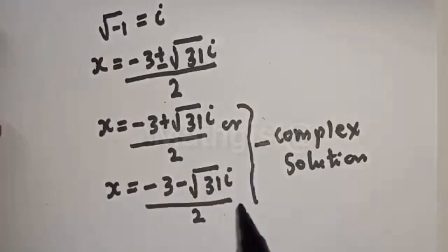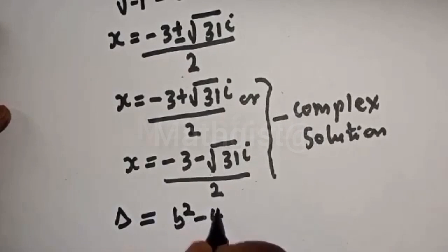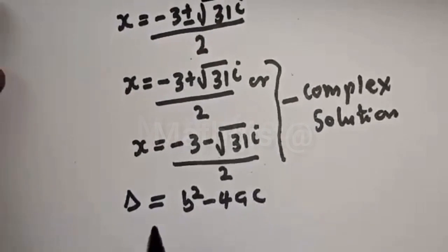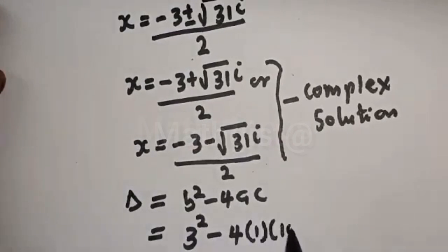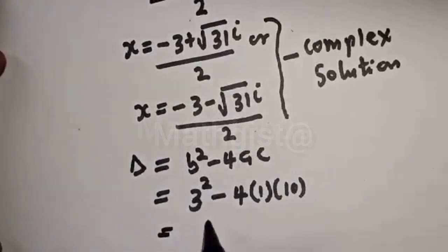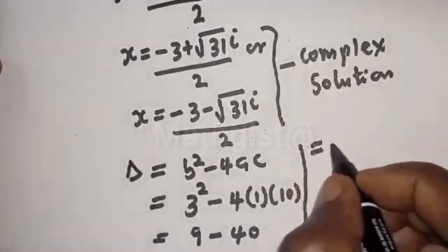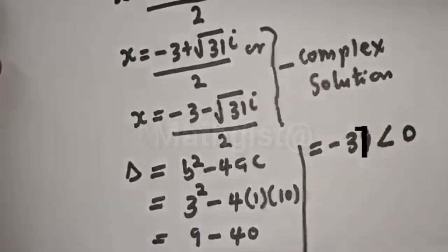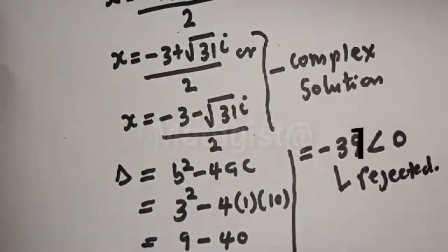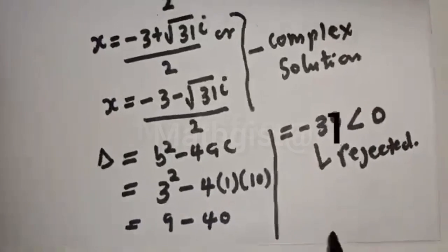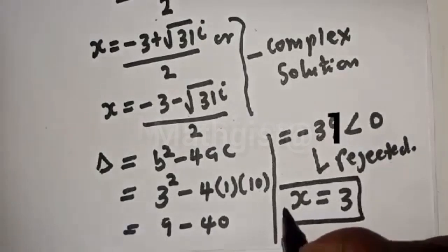Since the question asks for the real value of s, we confirm using the discriminant: b² − 4ac = 9 − 4 × 1 × 10 = 9 − 40 = −31, which is less than zero. So the complex roots are rejected. The only real solution is s = 3.